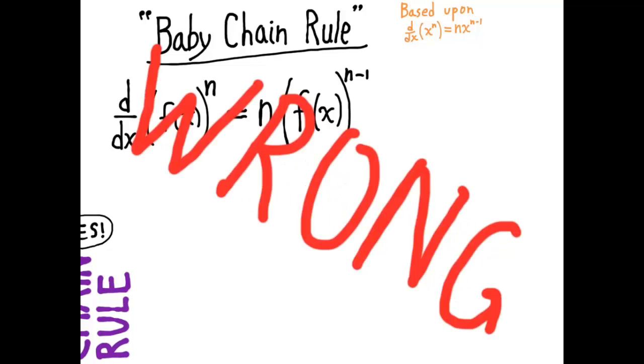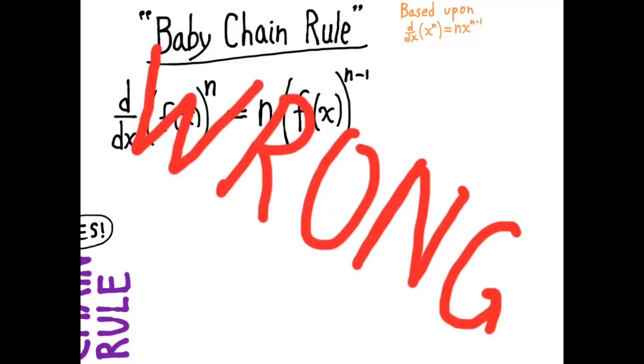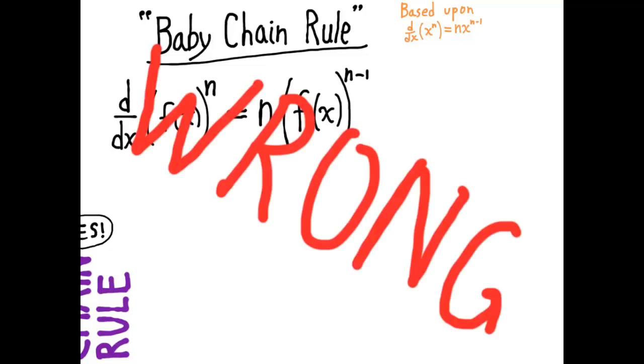The warning symbol started flashing because I didn't finish writing the equation. You can't just say it's n times f of x to the n minus 1. There's an extra factor. I write times a factor that I call the chain rule factor, which is the derivative f prime of x. And now it's correct.